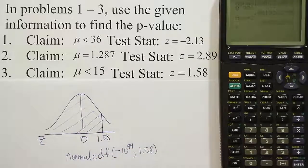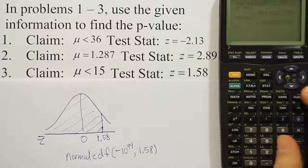And that will give us the area for this part of the curve that's shaded, the area to the left of the test stat. So obviously, it's going to be greater than 50%. Alright,